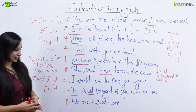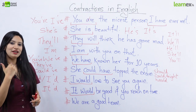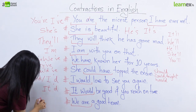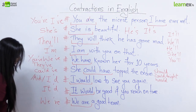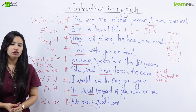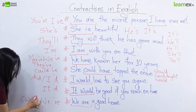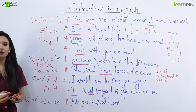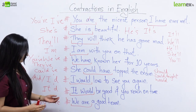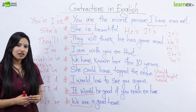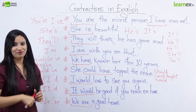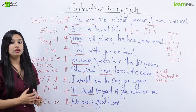Now hum dekhenge humara last sentence: 'We are a good team.' Yahan par we aur are ko join karke banayenge we're. We're a good team. Kya aap jaante hain ki contractions ko hum question tags mein bhi use kar sakte hain? Jaise ki: We're a good team, aren't we? Yahan par humne are aur not ko join karke banaya aren't we. Yeh ek negative contraction ka example hai.